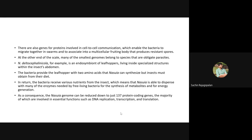Nasuia's genome is very small — just 137 protein-coding genes — because it acts as a parasite. The majority of these genes are involved in essential functions like DNA replication, transcription, and translation, but not for metabolism, since it gets everything ready-made from its host. Only the genes necessary for survival and multiplication are present in its genome.